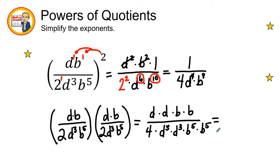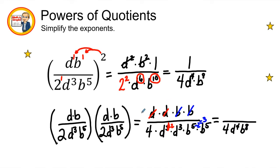Let's simplify. I have d squared on top and d to the sixth on the bottom — subtracting 2 from 6 leaves d to the fourth in the denominator. For b's: I take 2 away from 10, which leaves 8, so b to the eighth stays in the denominator. Everything on top cancels to 1, giving us 1 over 4d⁴b⁸.